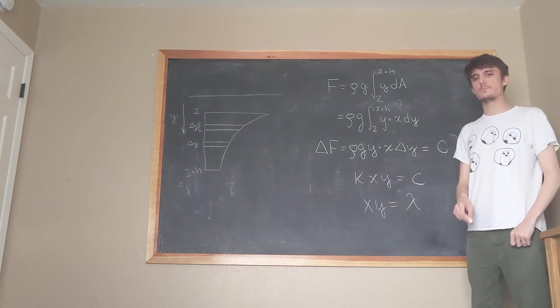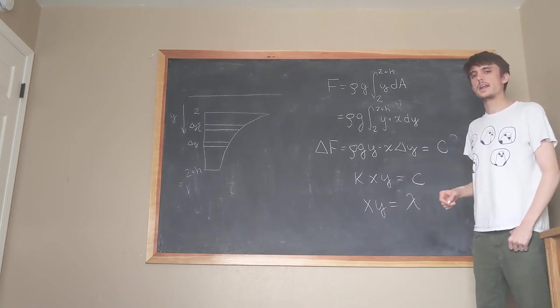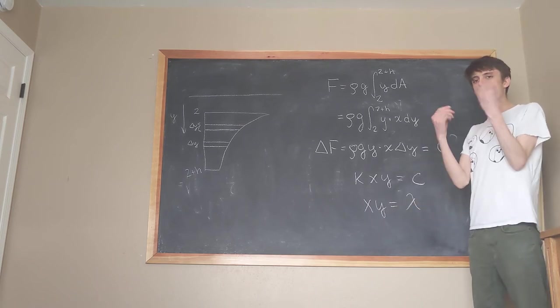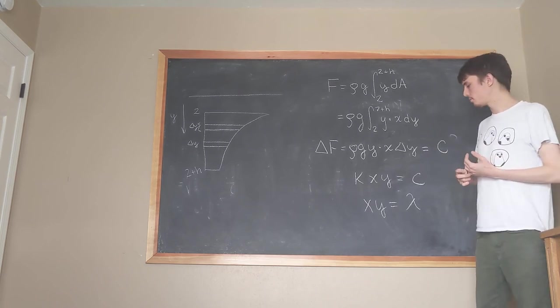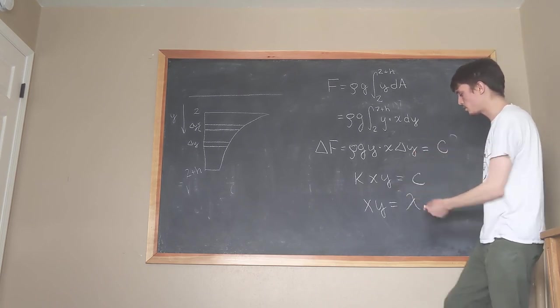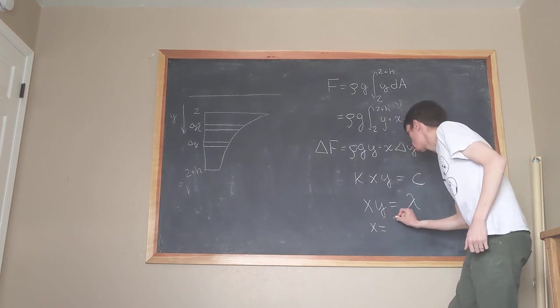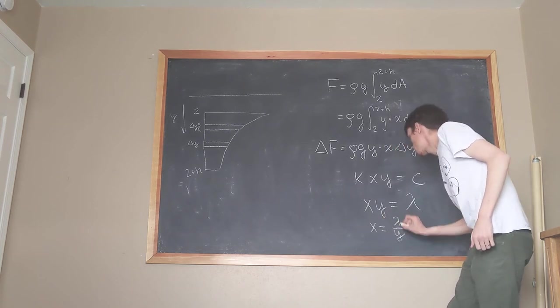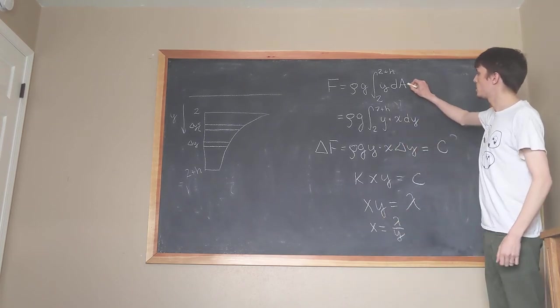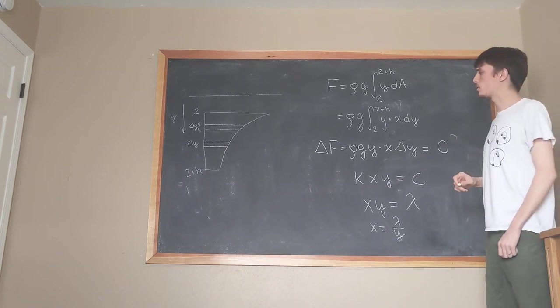So this is the relationship that must hold so that I get constant force on any particular strip of my choosing. And so let's go ahead and just rearrange a little bit. This means of course then that x is equal to some constant λ over y, and that means that I can actually evaluate these force integrals now.